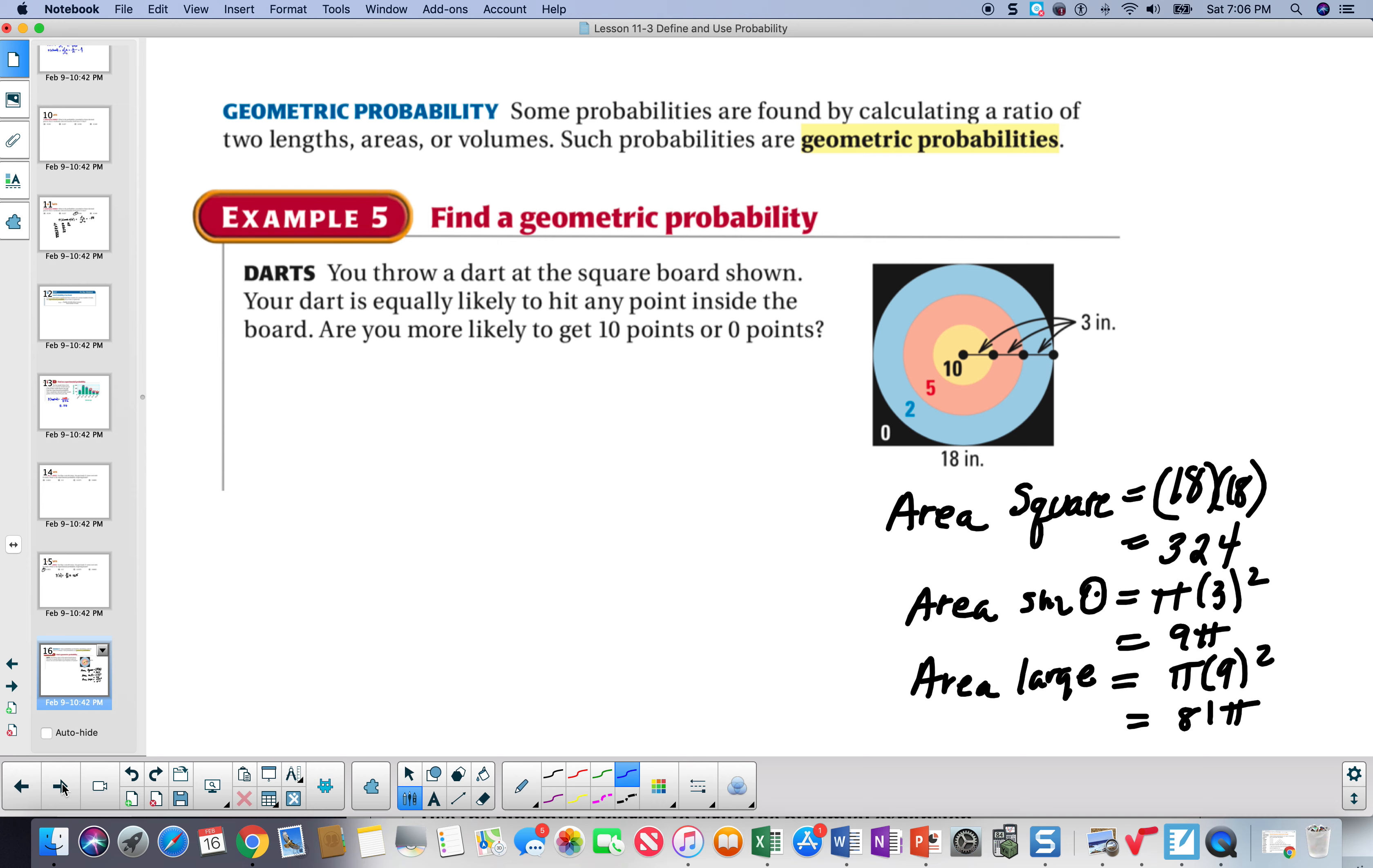Let's take a look at geometric probability. Some probabilities are found by calculated ratio of the two lengths, areas, or volumes. Such probabilities are geometric probabilities. What's the likelihood to get 10 points or 0 points? So, the probability of getting 10 points.